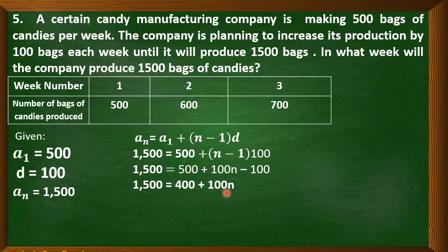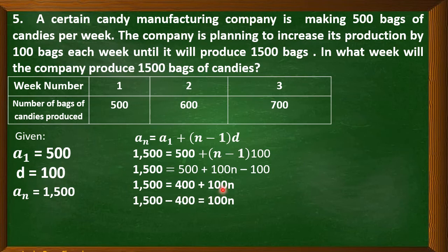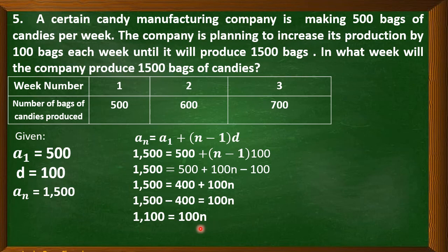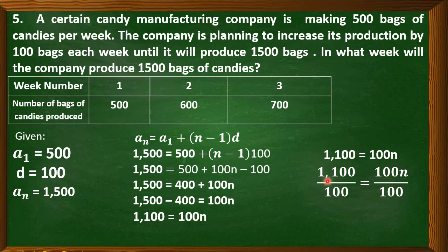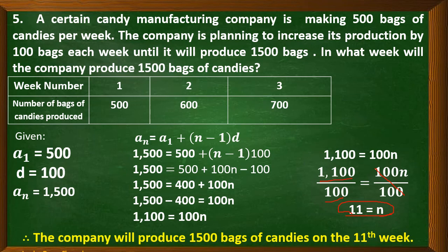To solve for N, transpose 400 to the left side. So 1,500 minus 400 equals 100N. That gives 1,100 equals 100N. Divide both sides by 100: N equals 11. This 11 refers to the week — the company will produce 1,500 bags of candies on the 11th week.